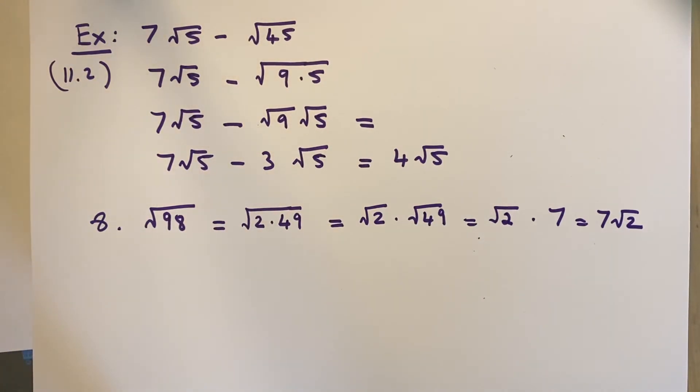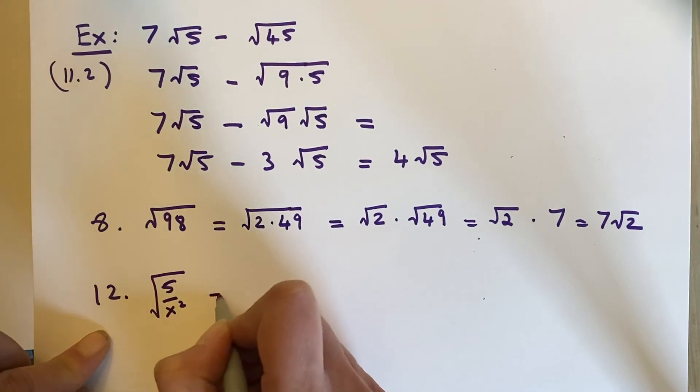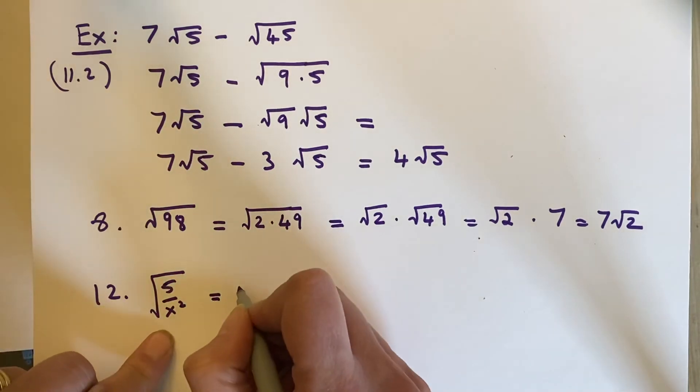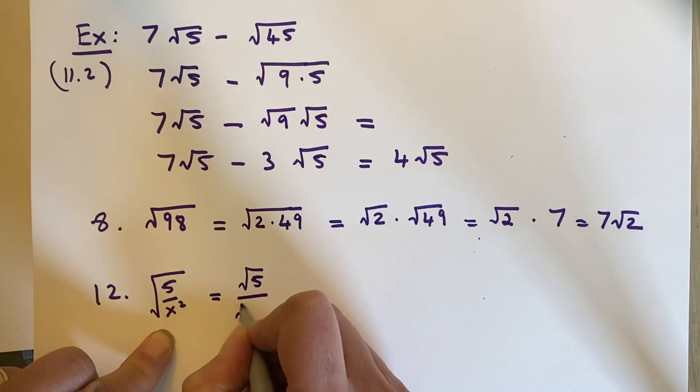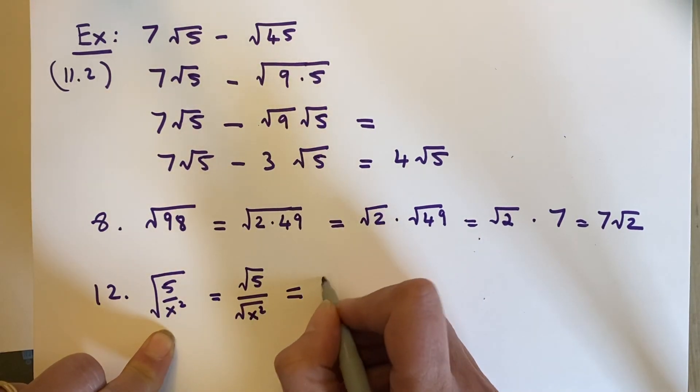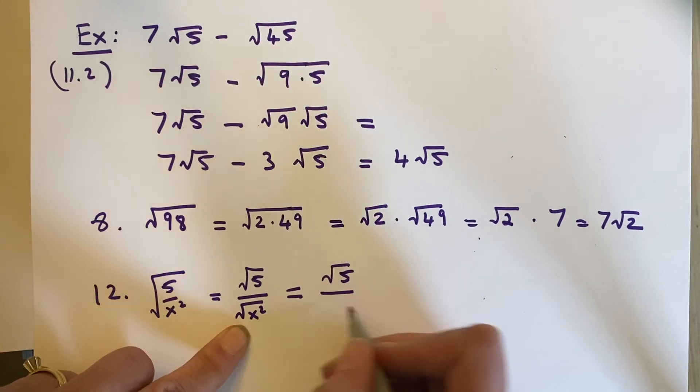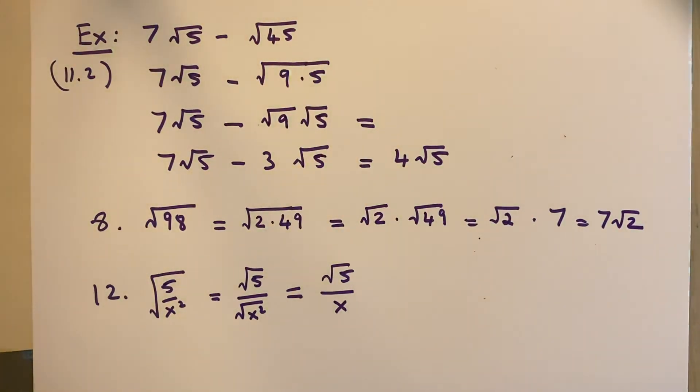Let's look at number 12. Number 12 tells me the square root of 5 over x squared. When I have a quotient, I can break it up with square root on top and square root on the bottom. And I can deal with each of these separately. Well, this is as simplified as it gets. But this is not because I have the square root of a perfect square. And I know that the square root of x squared is just x. And so this is my answer. I'm going to stop there and I will pick up with the word problem 11.2 and then 11.3 in the next video. Thank you.